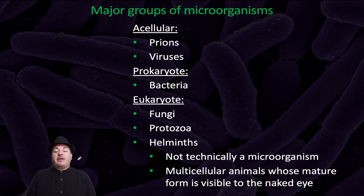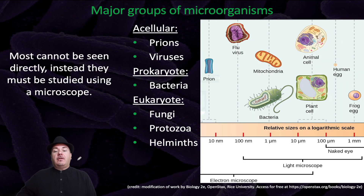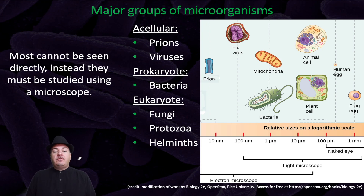Technically, helminths are not a microorganism — they are multicellular animals whose mature form is visible to the naked human eye. Speaking of sizes, most microorganisms cannot be seen directly; instead, they need to be visualized using a microscope.